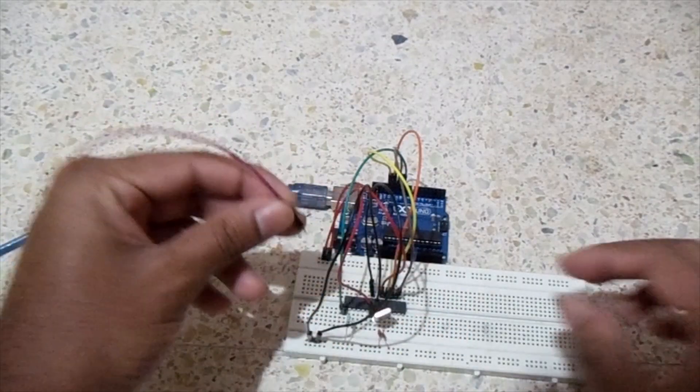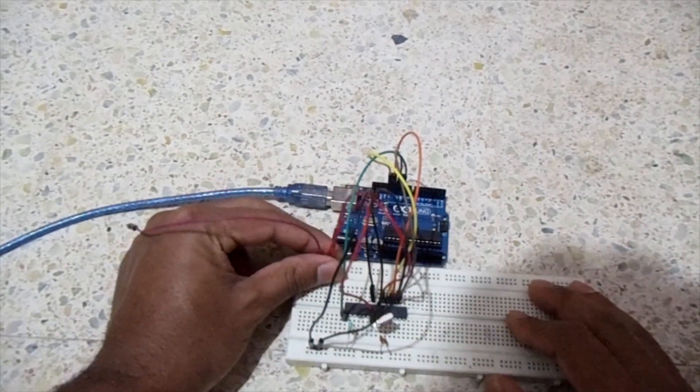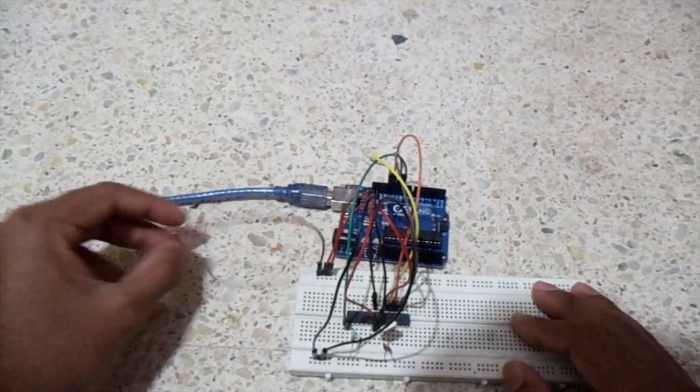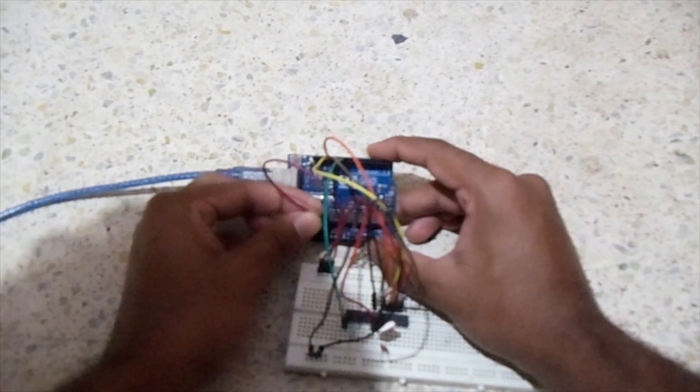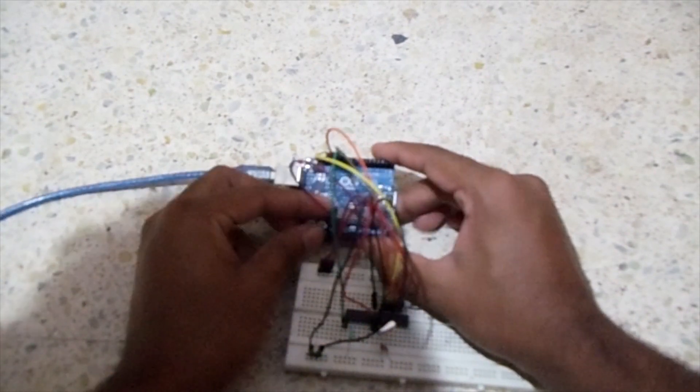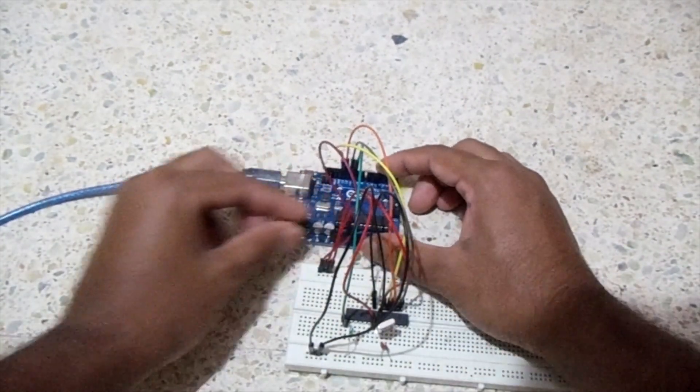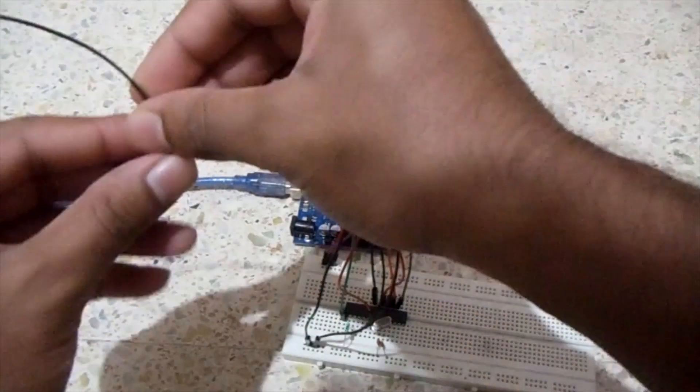Now connect 5V of Arduino Uno to VCC of ATmega328P. Then connect the GND to GND.